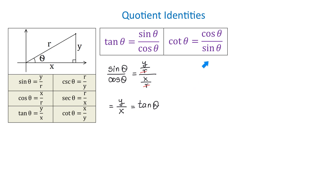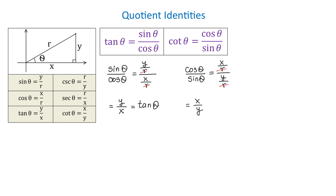Now, let's divide cosine of theta by sine of theta. Cosine is x over r and sine is y over r. Again, r cancels and we get x over y, which is cotangent of theta. So cotangent of theta equals cosine of theta over sine of theta.